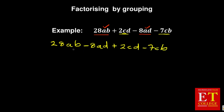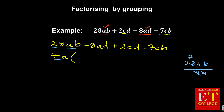Looking at the first two terms, the highest common factor of 28 and 8 is 4, and we chose A as the common variable. So I'm dividing 28AB by 4A: 4 into 28 gives 7, and A cancels to leave B, giving 7B. Then I divide 8AD by 4A: 4 into 8 gives 2, and A cancels to leave D, giving 2D. So the first group becomes 4A(7B minus 2D).